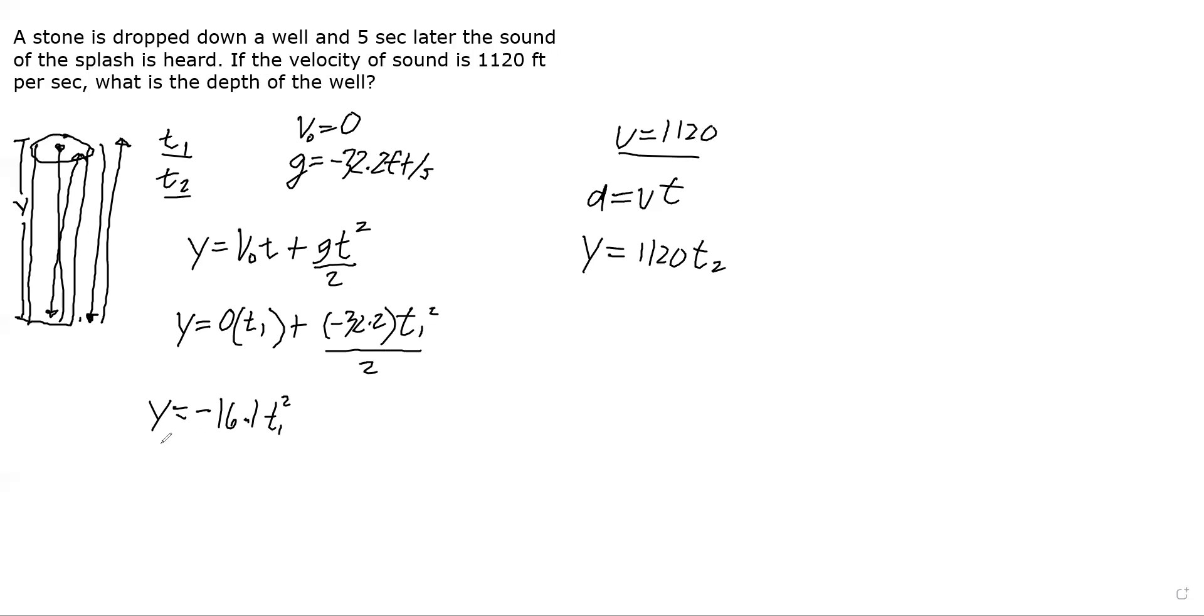Now we have two equations. Since they're both equal to y, let's equate them: 1120 t₂ equals negative 16.1 t₁ squared. But here let's disregard the negative sign. Why? Because we're talking about height, so they should both be the same height. Disregard the negative sign.